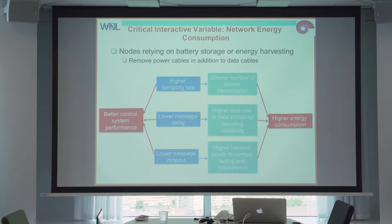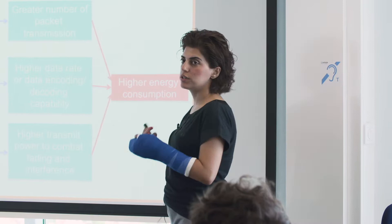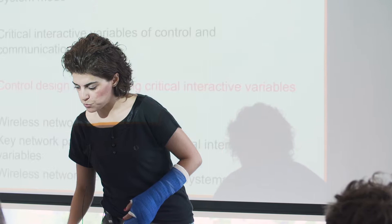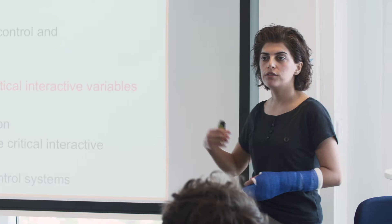The third critical variable is message dropout. The lower the message dropout, the better the control system performance. But this has a cost — we need higher transmit power to combat fading and interference, which results in higher energy consumption. That's a brief review of the first part.